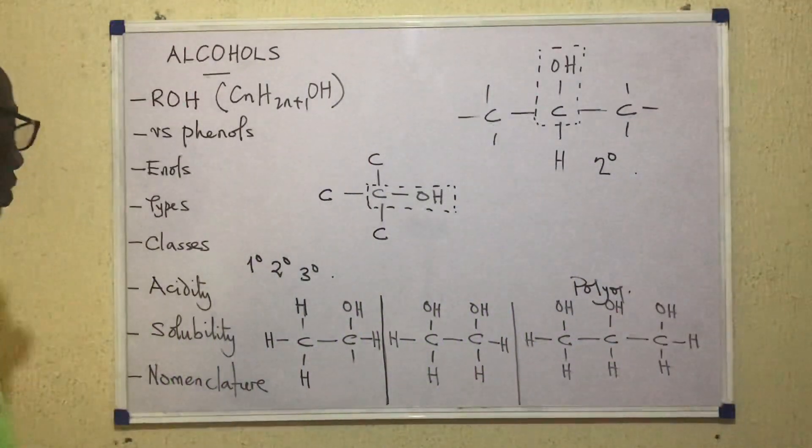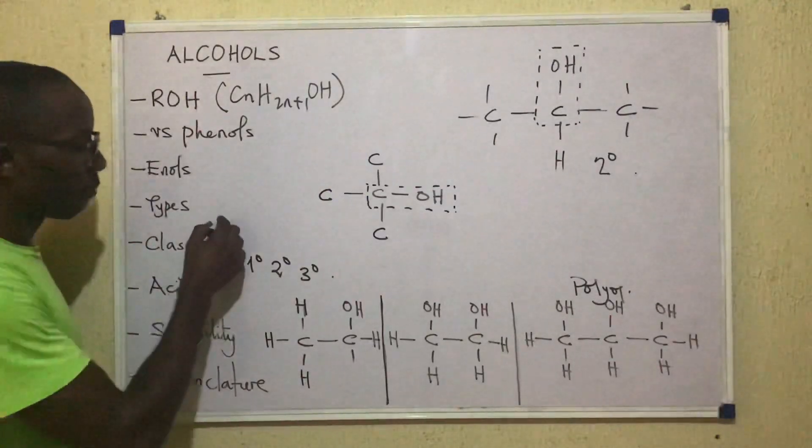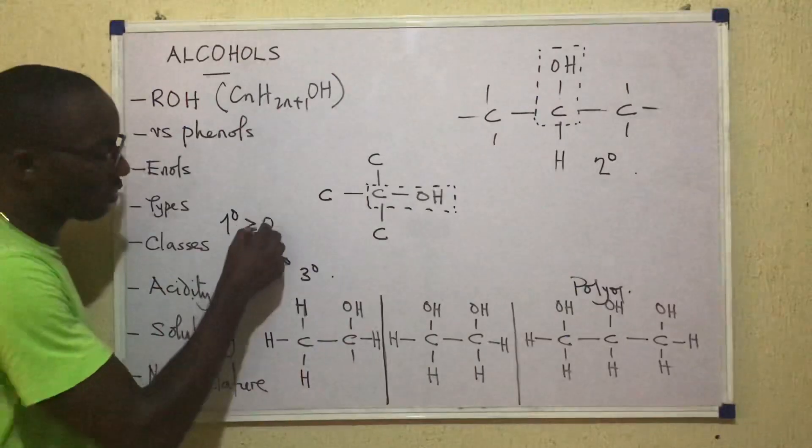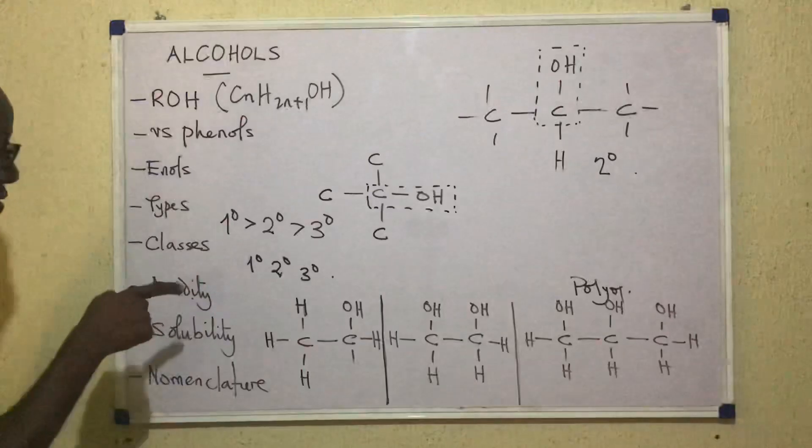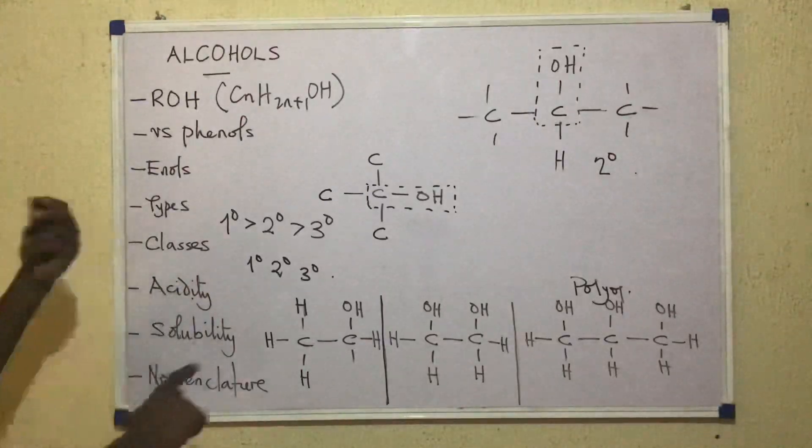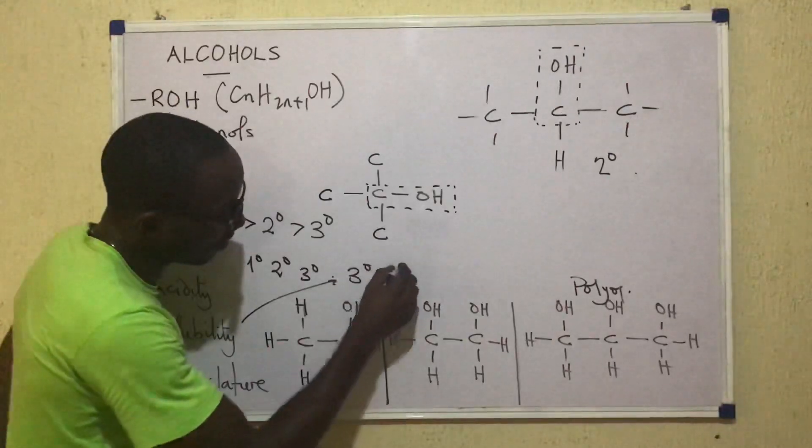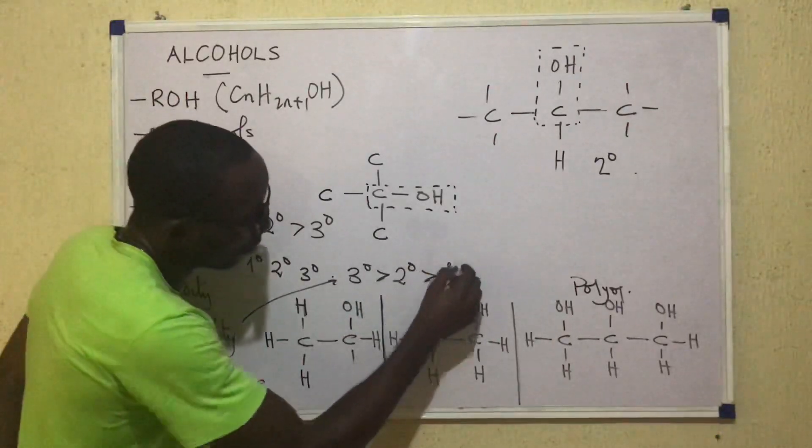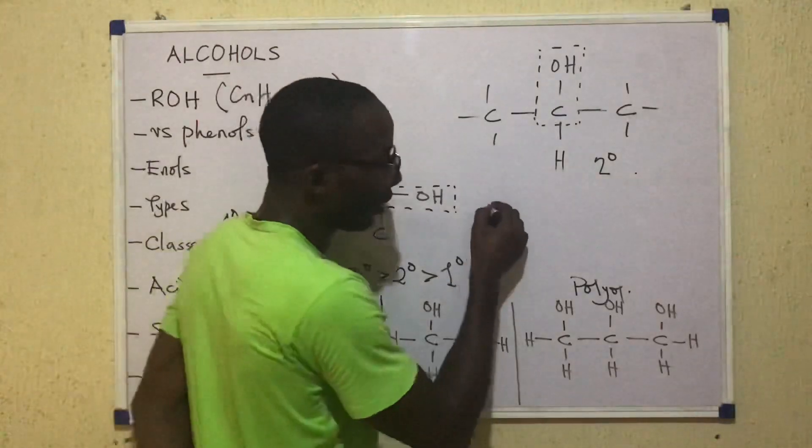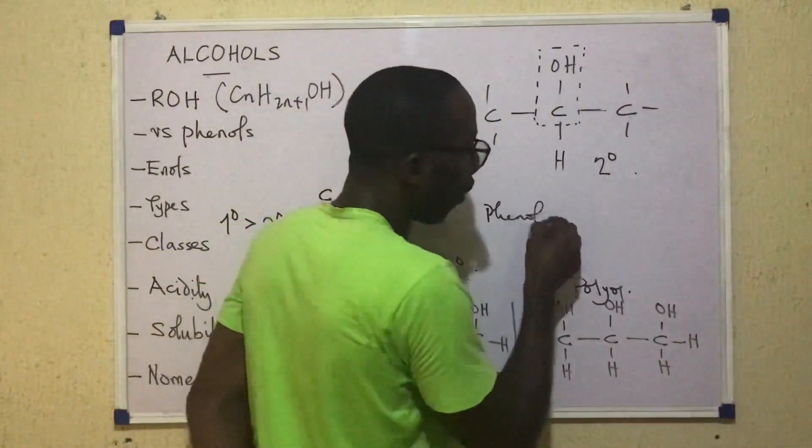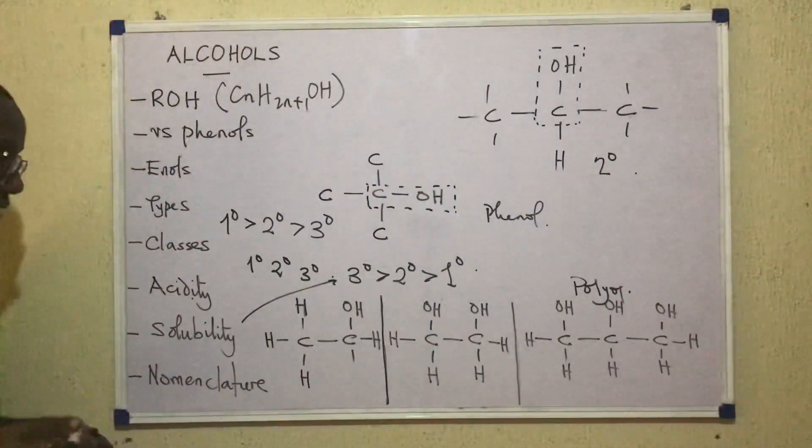Now it may be worthy of note that in terms of acidity, primary alcohols are the most acidic. They are more acidic than secondary and secondary more acidic than tertiary. Then in terms of solubility, it's the reverse. For solubility, we have tertiary greater than secondary, greater than primary. But in all this, bear in mind please, that phenol is more acidic than all alcohols. Phenols are more acidic than alcohols, generally speaking.